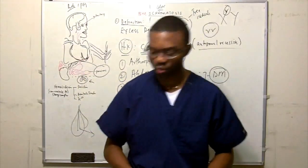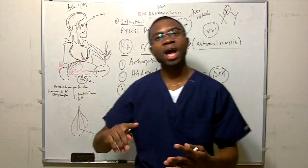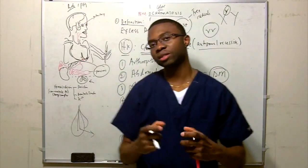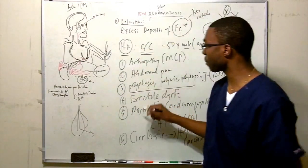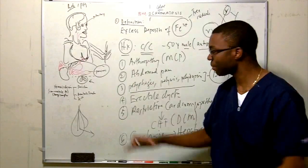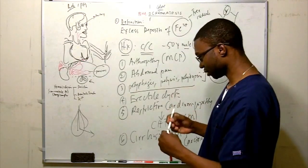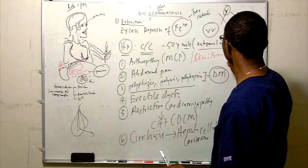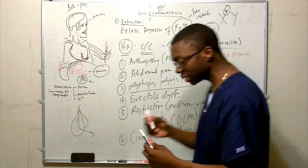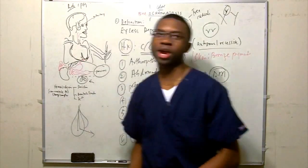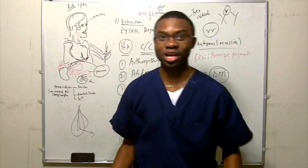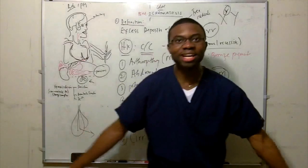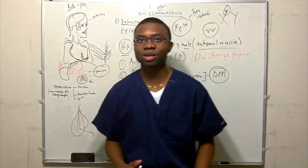So we've talked about all the symptoms: hypogonadism, testicular atrophy from both pituitary damage and direct deposition in the testes causing loss of testosterone, abdominal pain, and bronze skin. These patients can have up to 50 grams of iron in their body — literally like Iron Man — they walk through a metal detector and set it off.